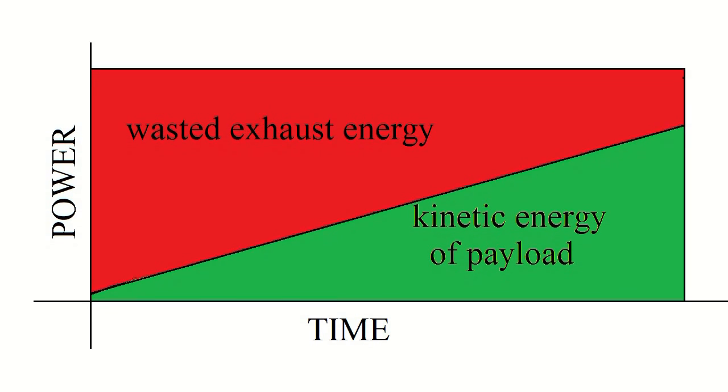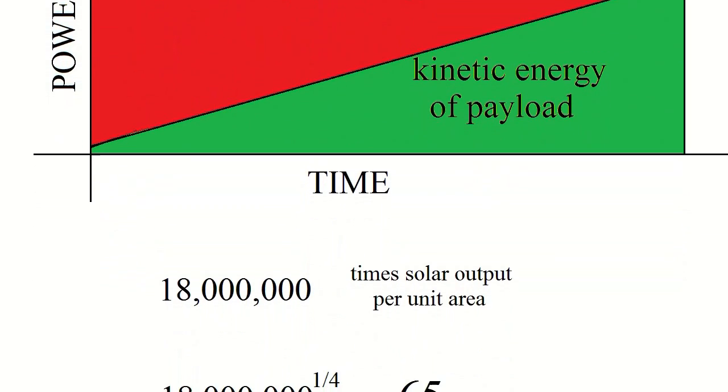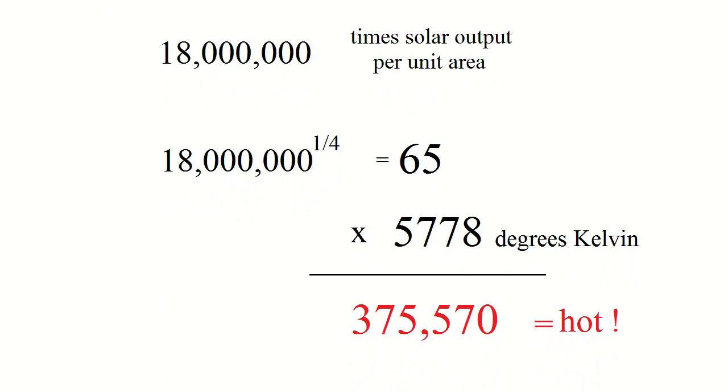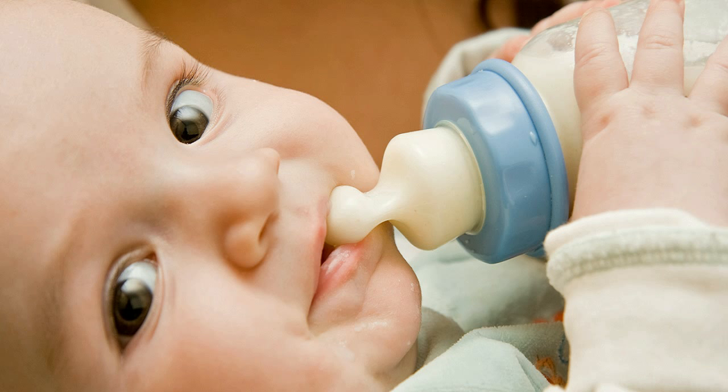Because temperature is related to energy output in a star as the fourth root, we can estimate the Avatar engine temperature by its output at 18 million times the solar output. The fourth root of 18 million is 65, while the surface temperature of the sun is 5,778 degrees Kelvin. So the internal engine temperature of the Venture engine would be 65 times 5,778, which equals 375,570 degrees Kelvin, or 375,297 degrees centigrade, which is a tad warmer than a baby bottle full of warm milk.